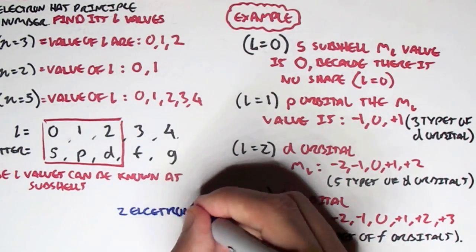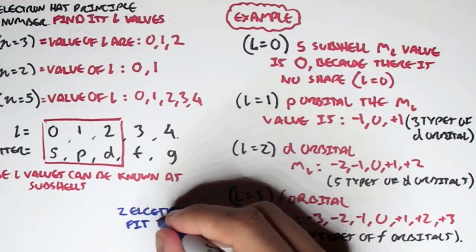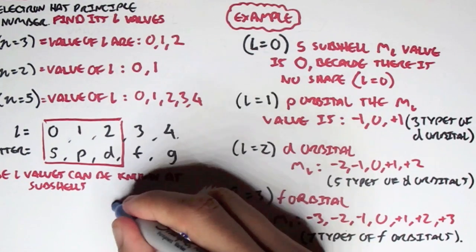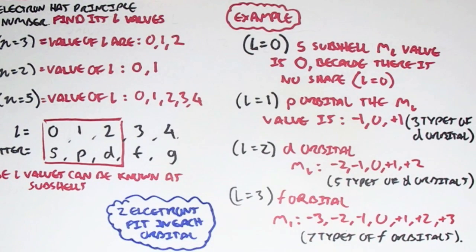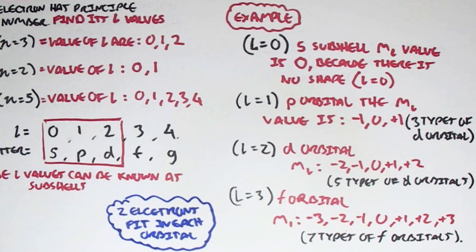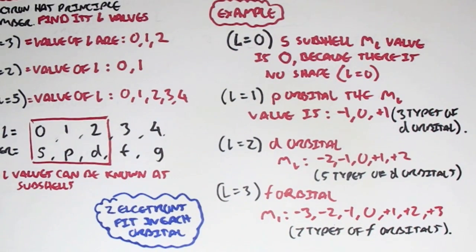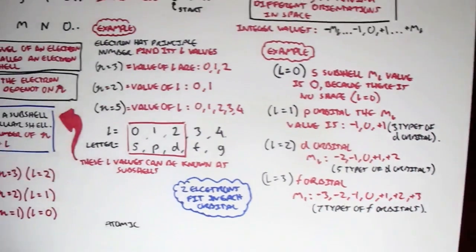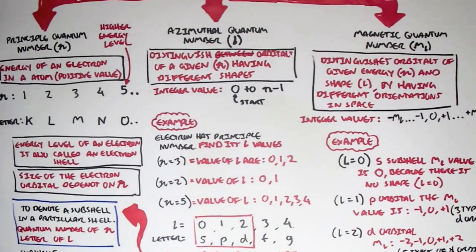Two electrons fit in each orbital. This means that two electrons can fit only in the S orbital. However, two electrons can fit in each of the three P orbitals, giving us a total of six. Two electrons can fit into each D orbital, and we have five types of D orbitals, giving us 10 electrons fitting in all of the D orbitals. The F orbital has seven types, which means that 14 electrons can fit in an F orbital.